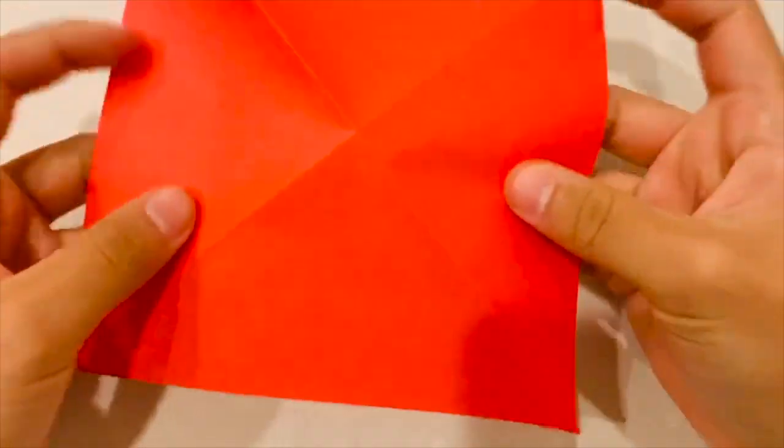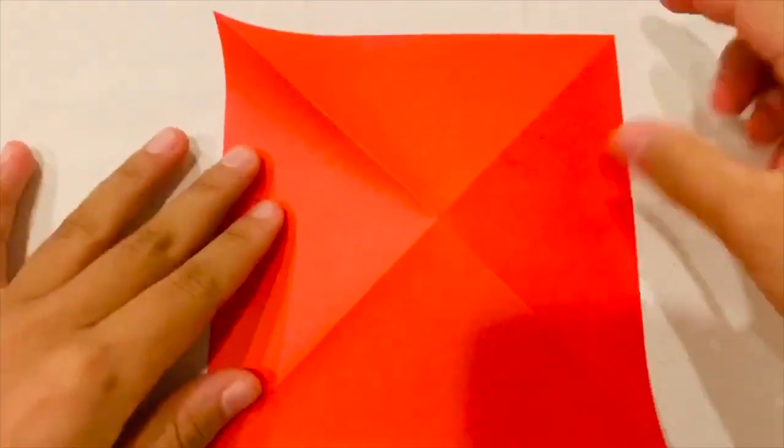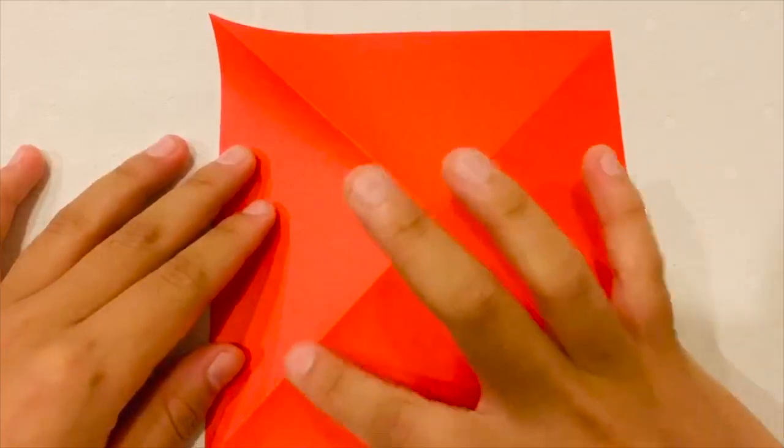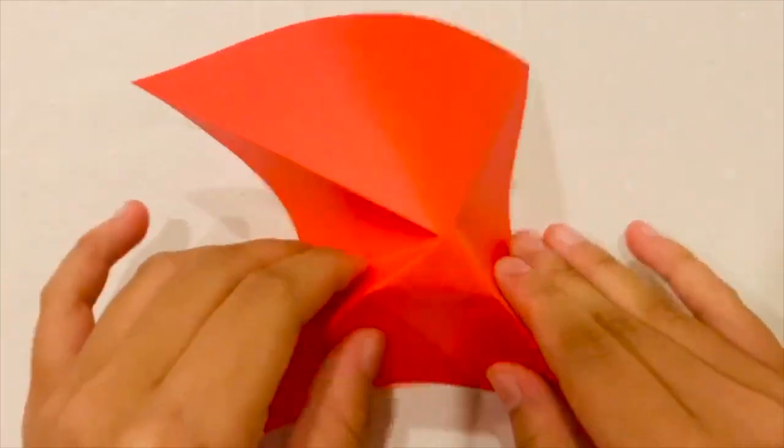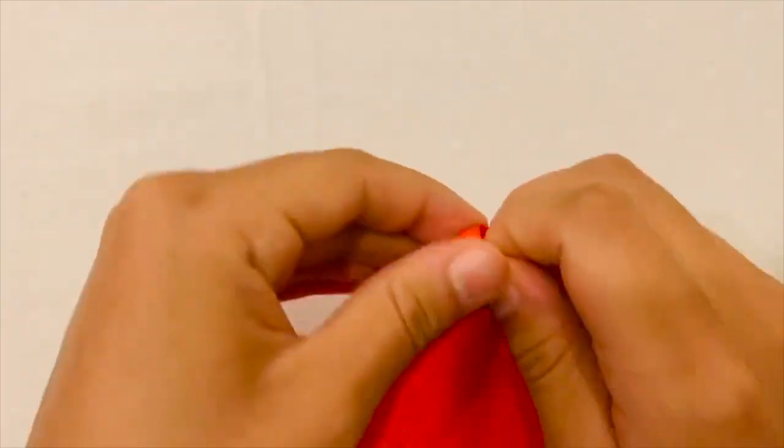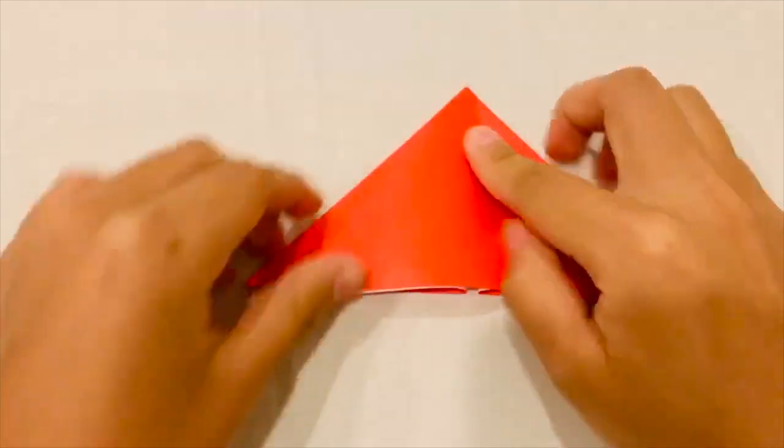Next, you're going to unfold, and using that X-like crease you've just formed, you're going to fold that triangle on top of the opposite triangle. And you should get a shape that looks like this.